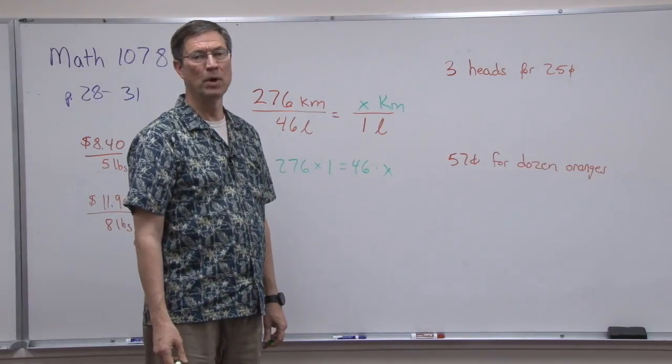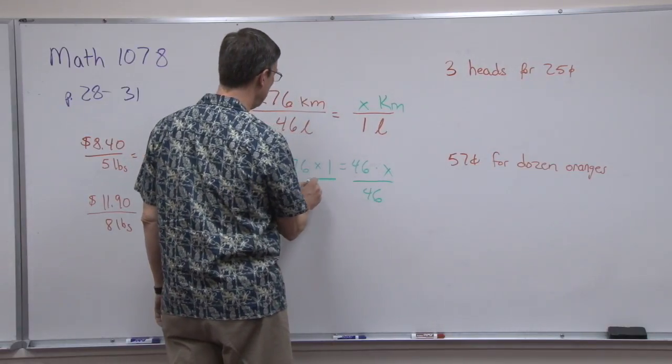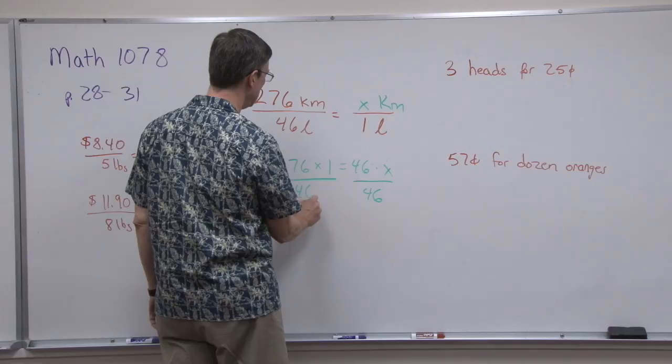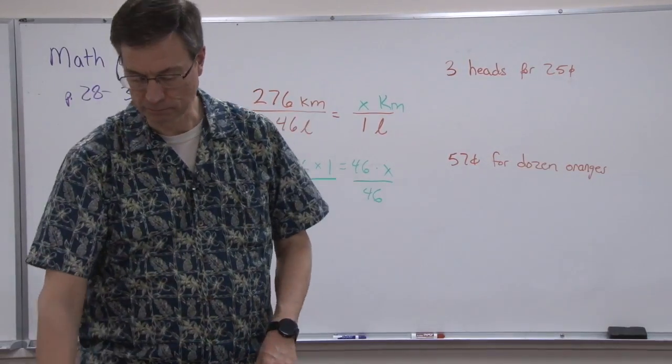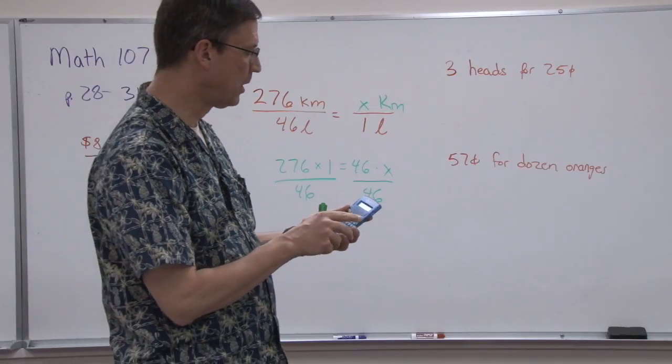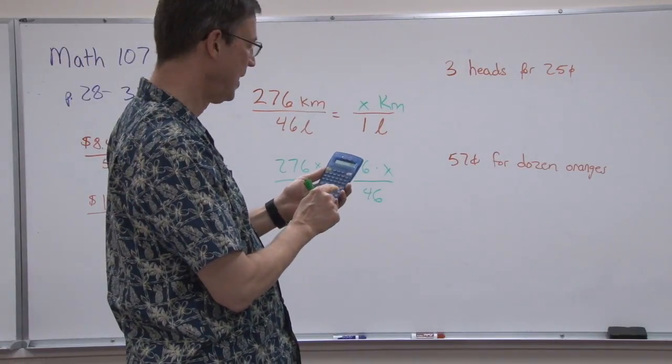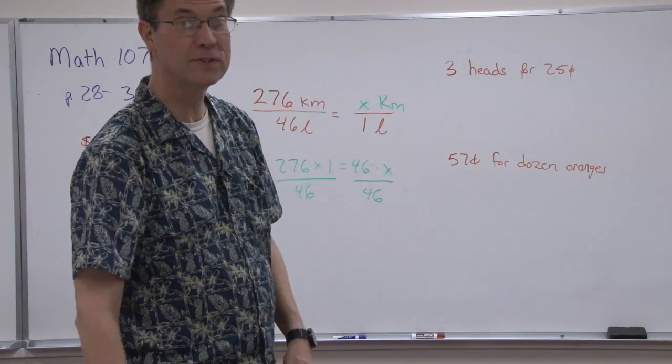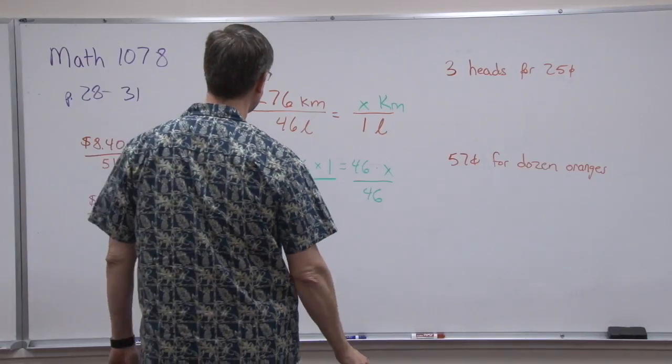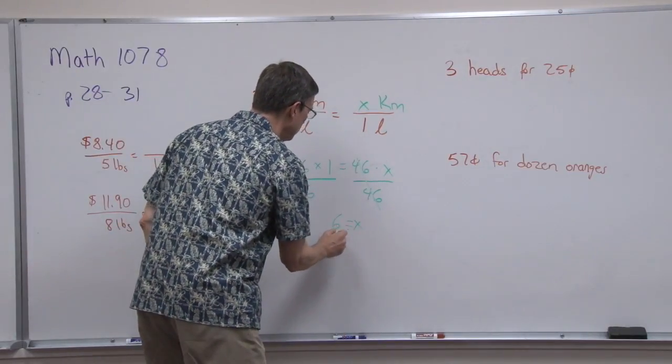What we're going to do is divide by 46, and take 276 and divide by 46. It's the end of a Friday and my brain doesn't want to do this, so I'm going to take 276 and divide by 46 and get the answer of 6. So that cancels and X equals 6.